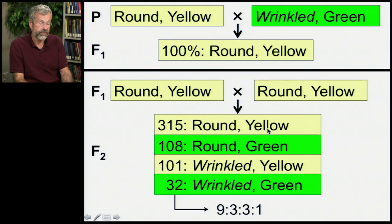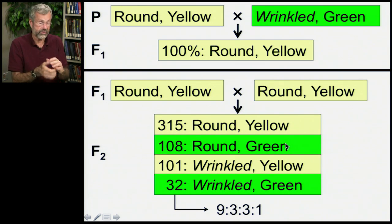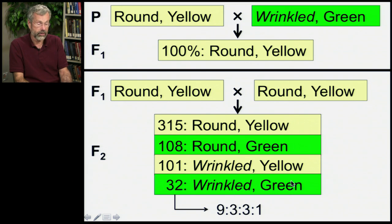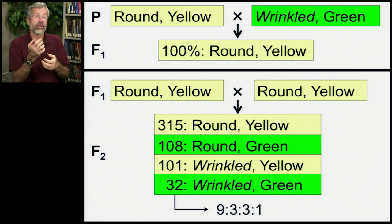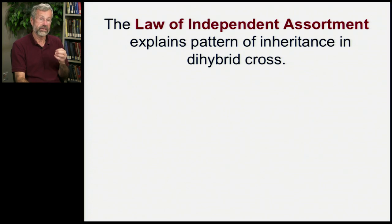These are both dominant phenotypes, so there are 9 of the double dominants. Here's just one of the dominant phenotypes together with one of the recessive phenotypes, and here's the other combination of dominant and recessive. Then here's the double recessive. We can explain this 9 to 3 to 3 to 1 pattern using Mendel's Law of Independent Assortment, which explains the pattern of inheritance in these dihybrid crosses.